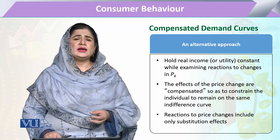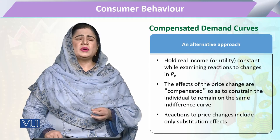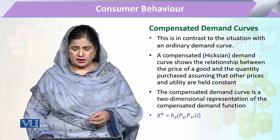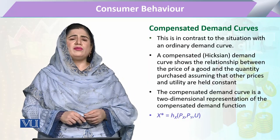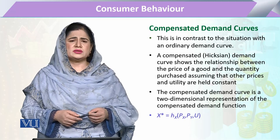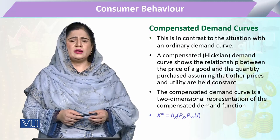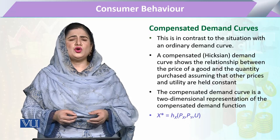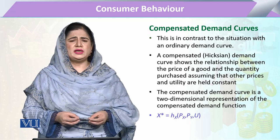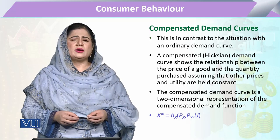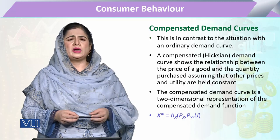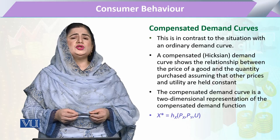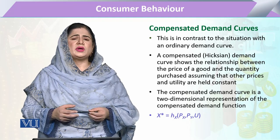When we compensate the consumer for any price change, it becomes the compensated demand curve. This compensated demand curve has the same price parameters — price of X and price of Y — but instead of income as in the Marshallian demand function, we use the utility level that must be kept constant.